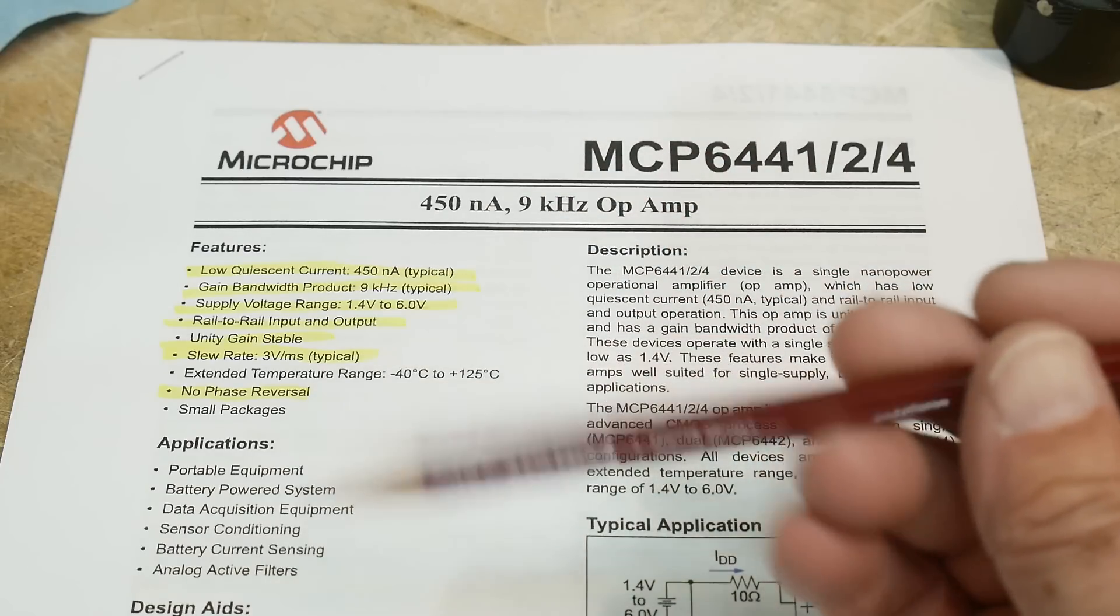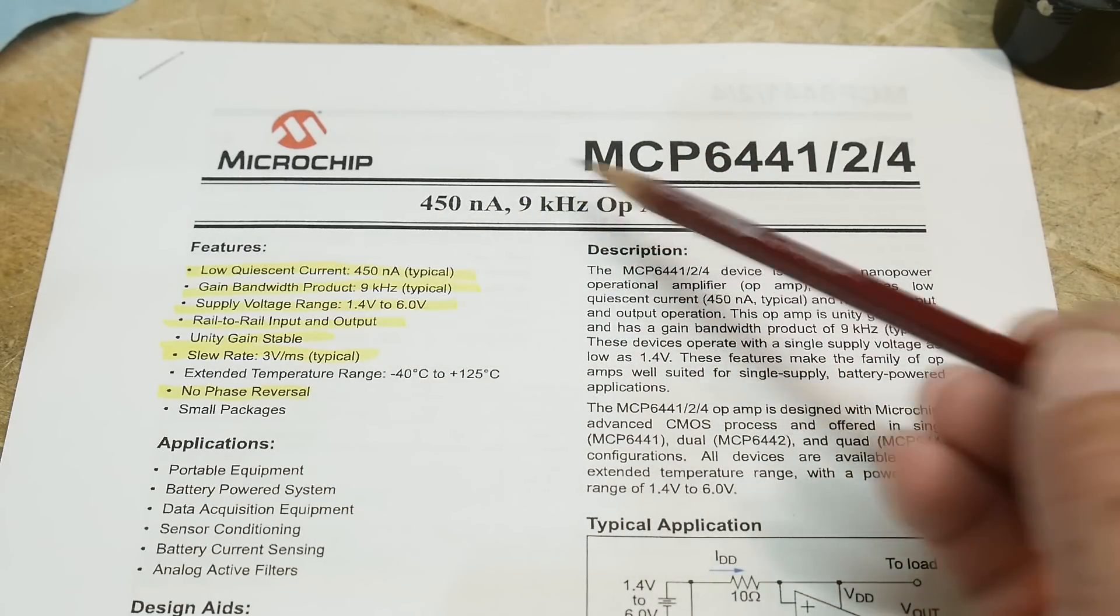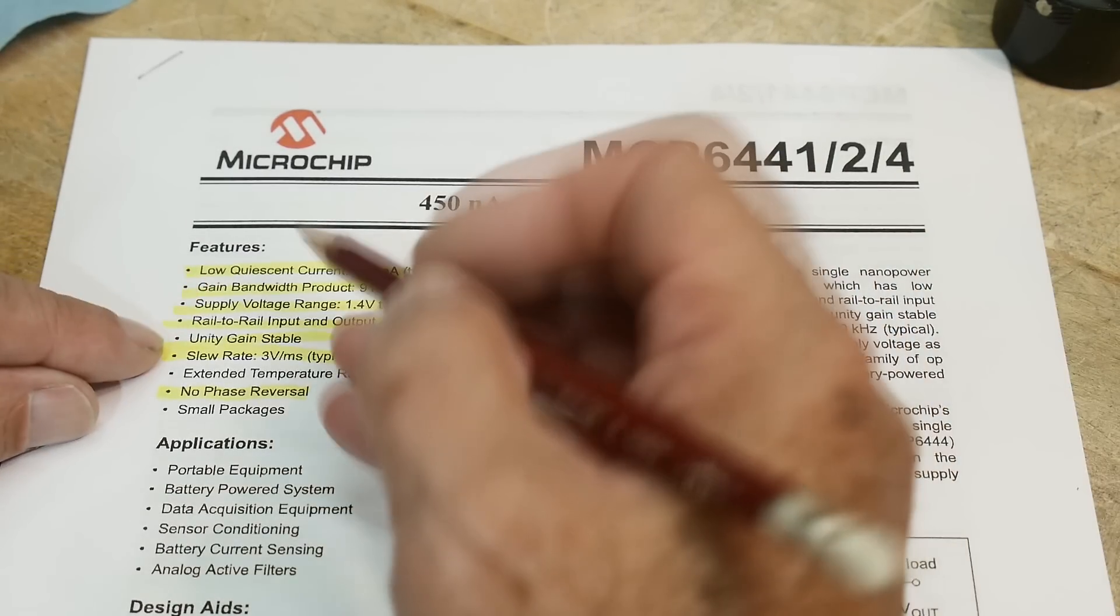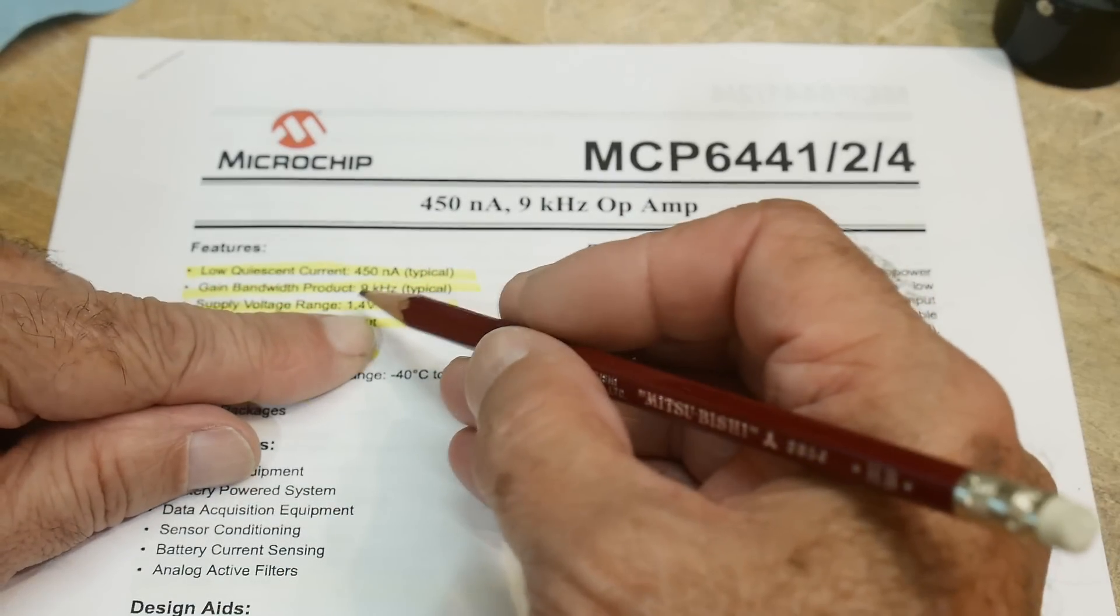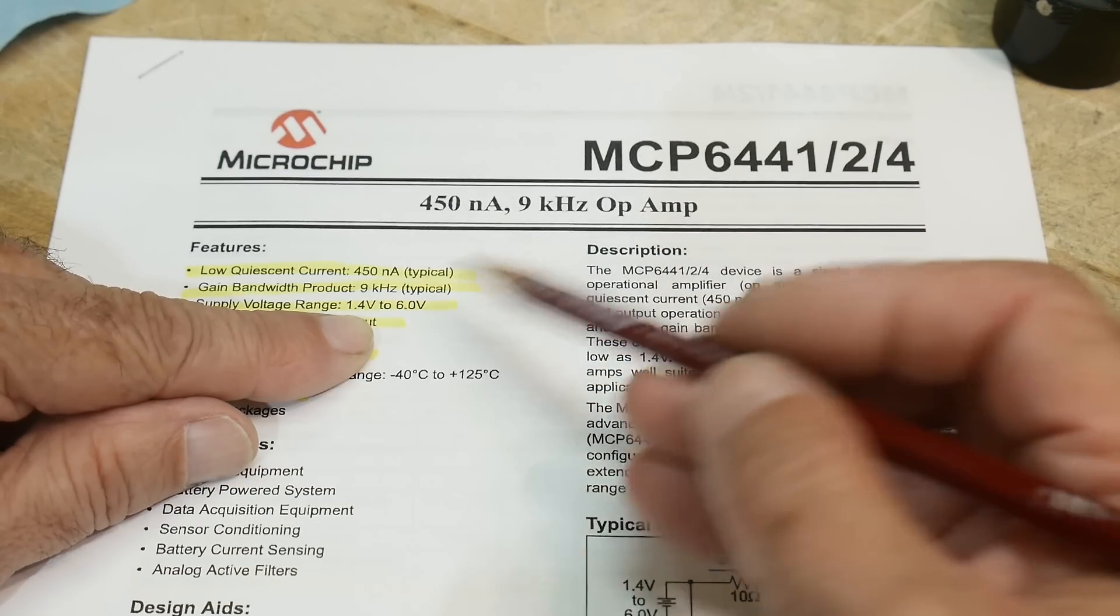For monitoring things like power supplies or batteries and things like that. So yeah, it's kind of a specialized op-amp. It is single rail, 1.4 volts to 6 volts, so you can operate this thing really really low voltage.